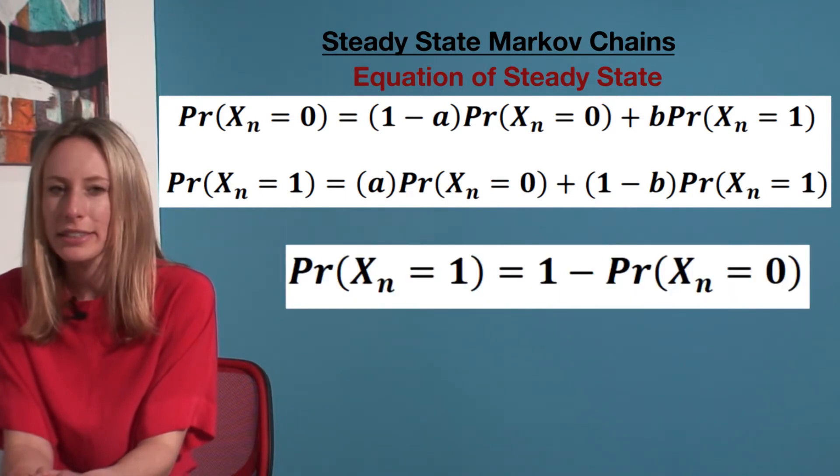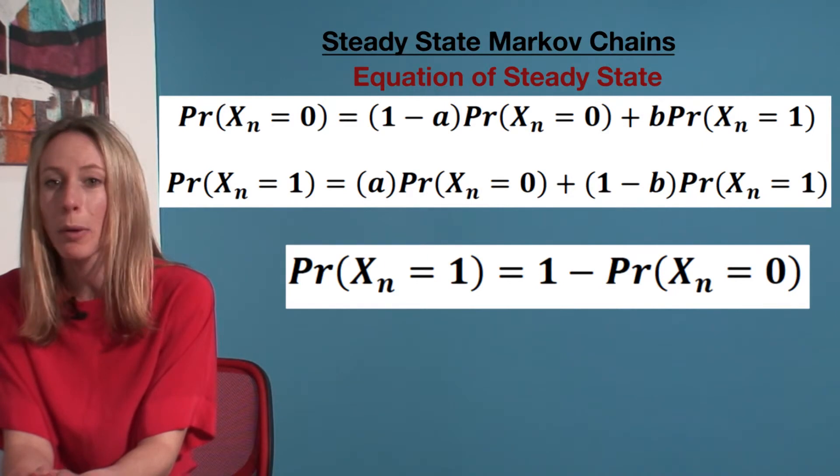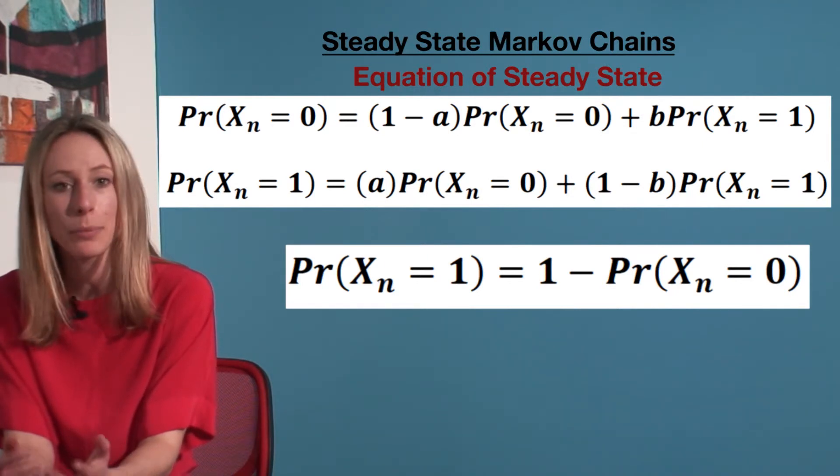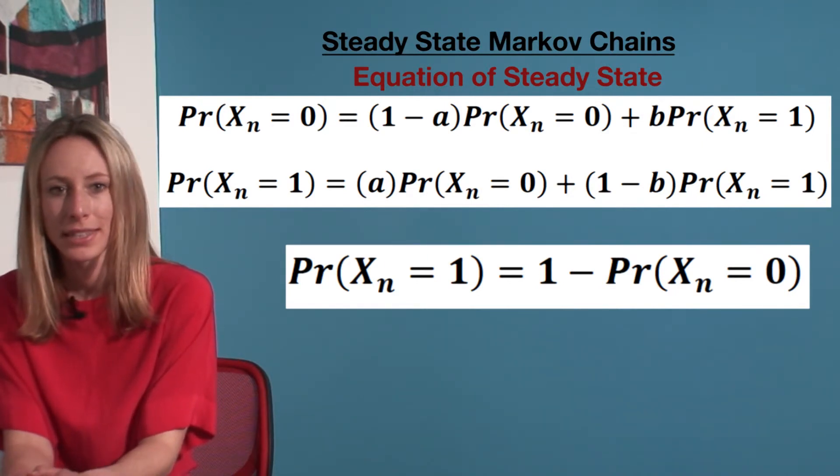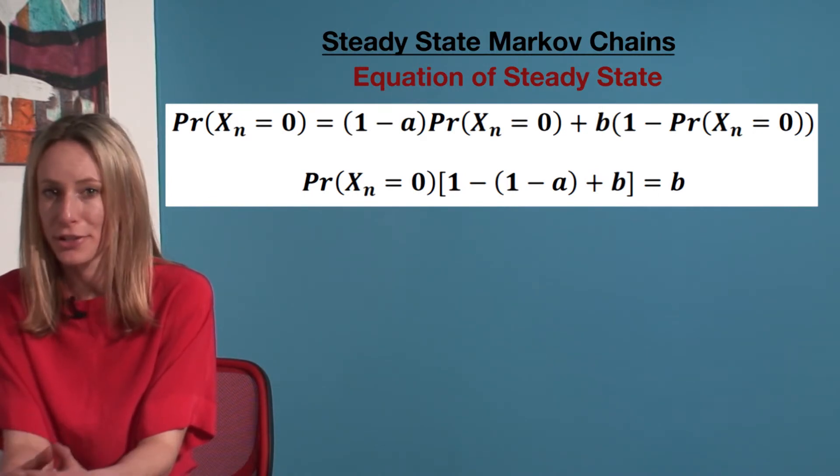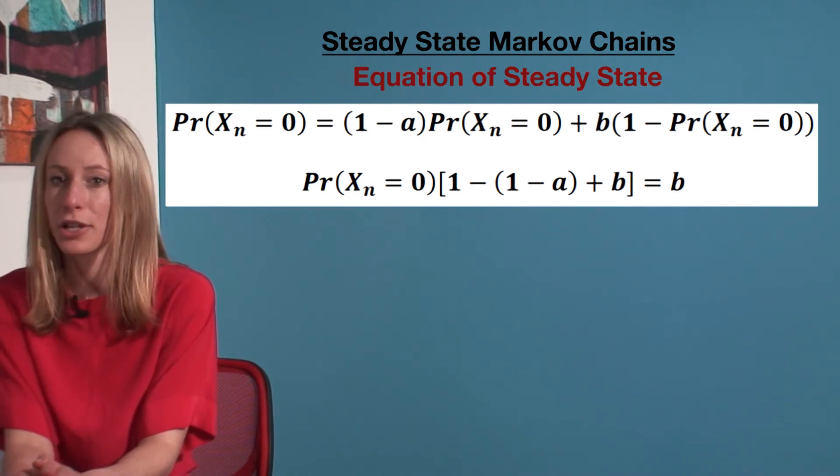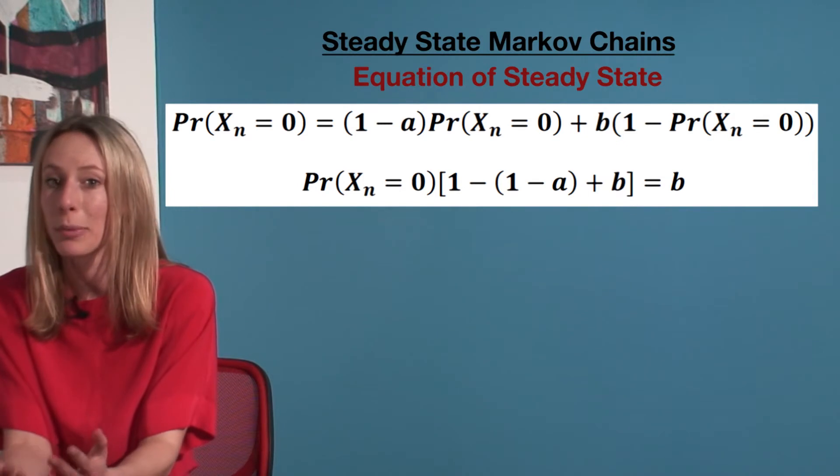Now, since it is a two-state system, the probability that it is state one is simply 1 minus state zero. We can substitute this into equation one, move all the state zero terms to the left, and take out the common factor.